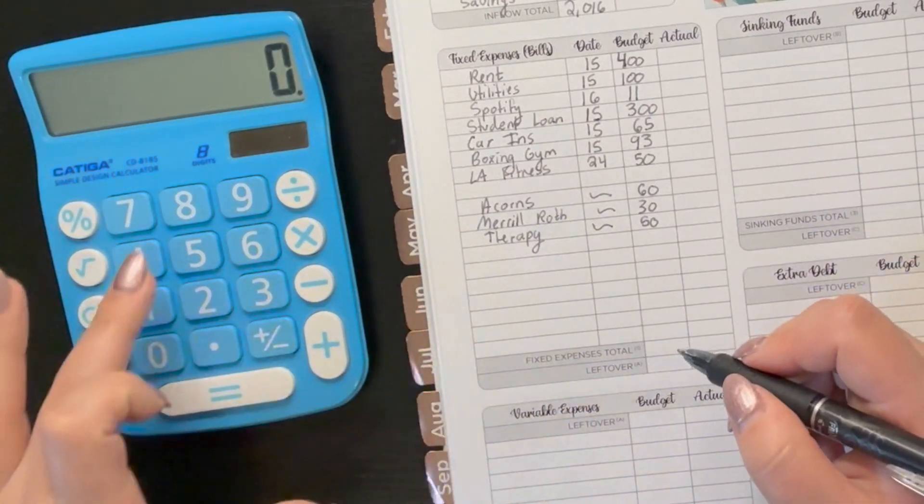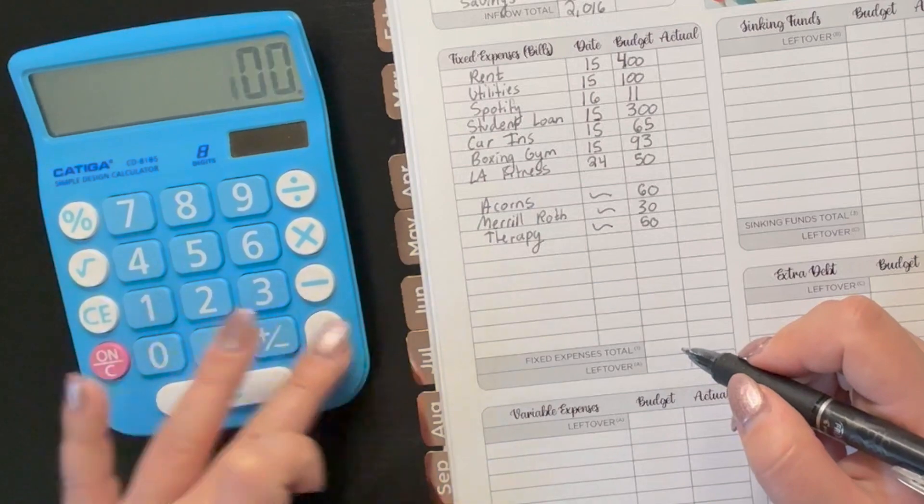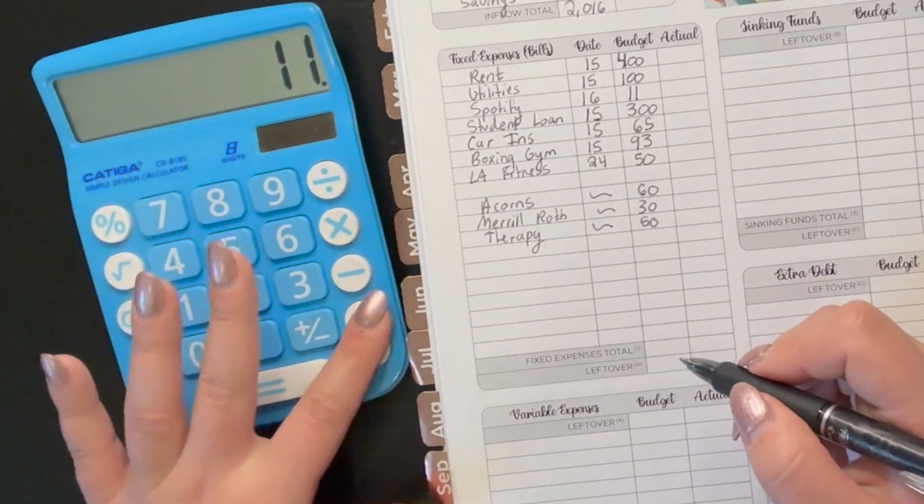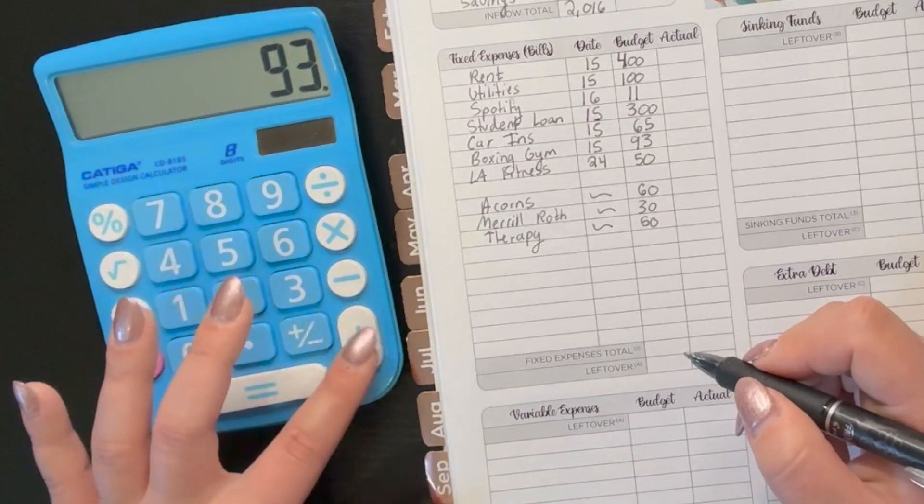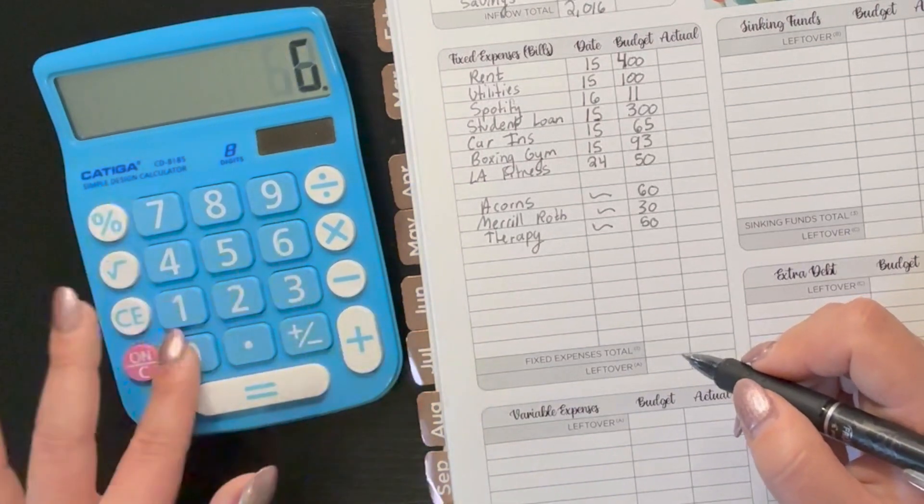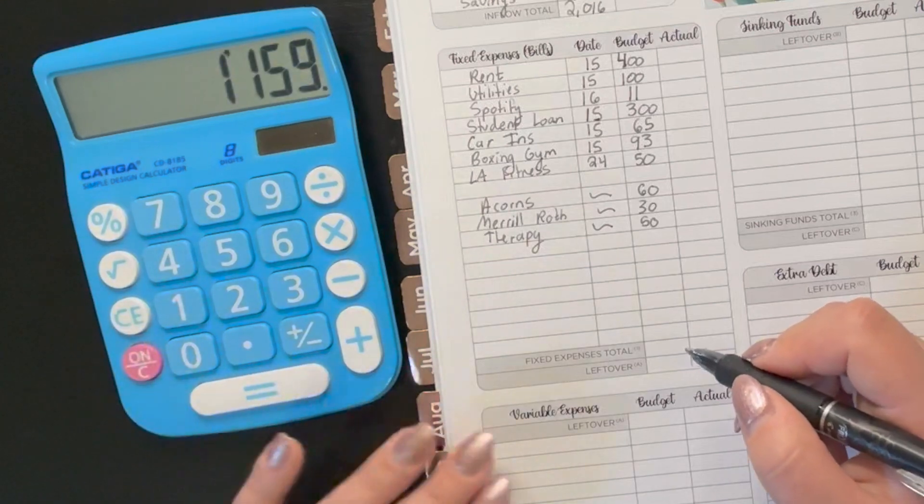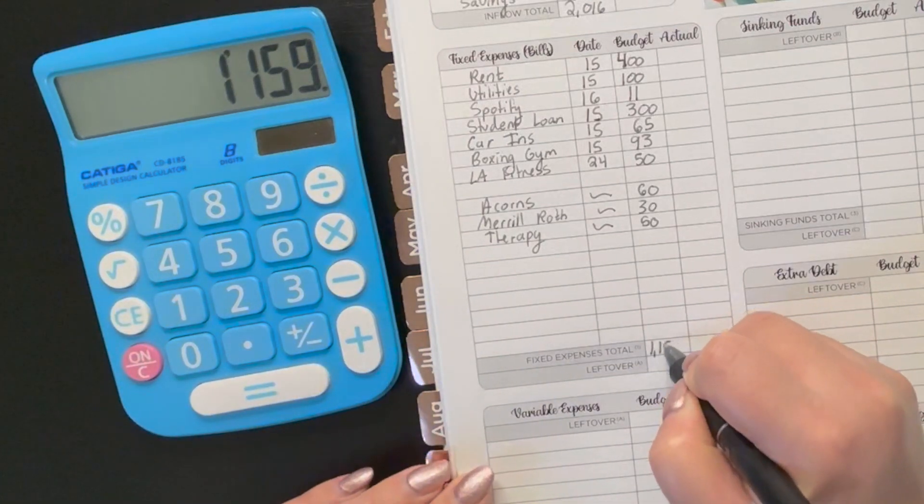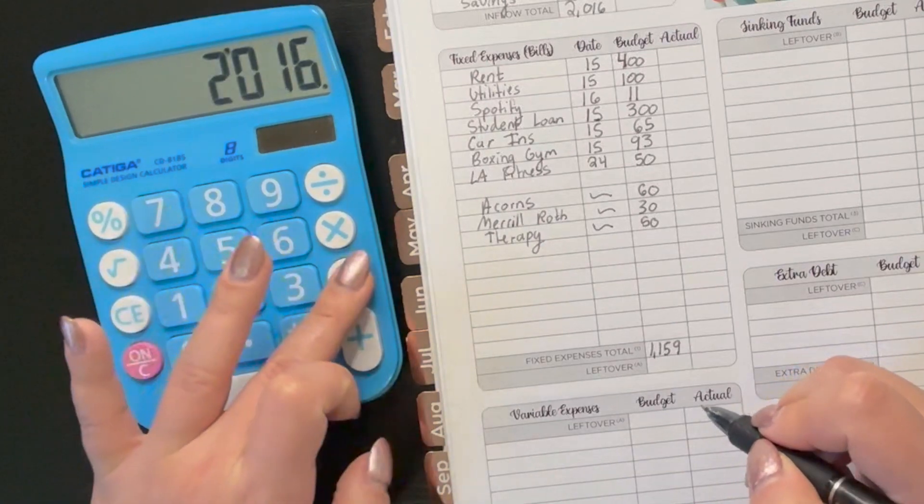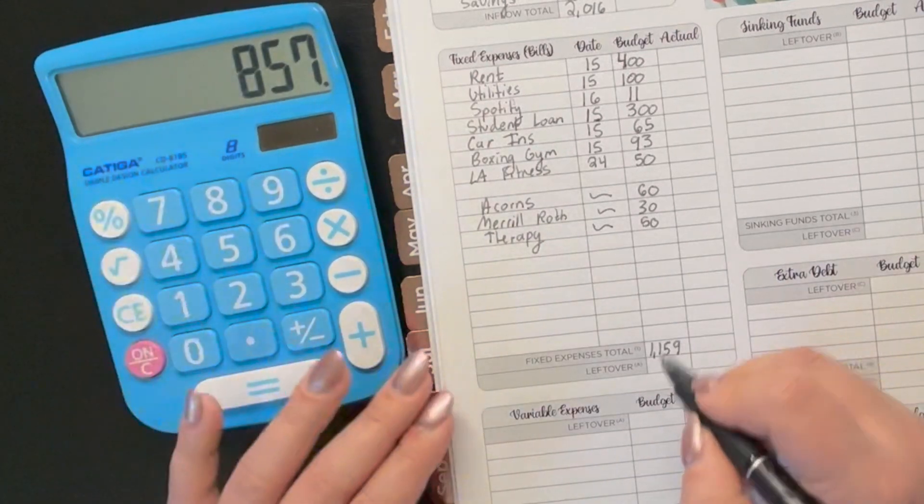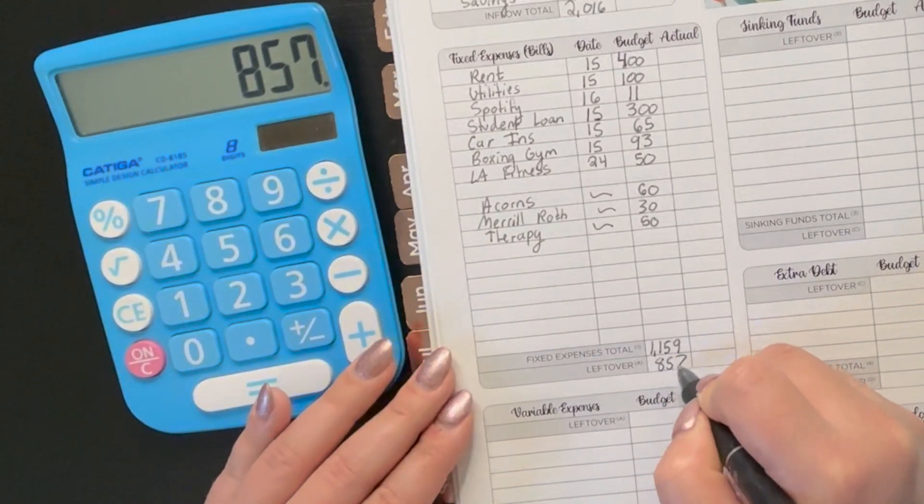So if we add that all up, we've got $400 plus $100 plus $11 plus $300 plus $65 plus $93 plus $50 plus $60 plus $30 plus $50 gives us $1,159. So taking the $2,016 minus $1,159 gives us $857 leftover.